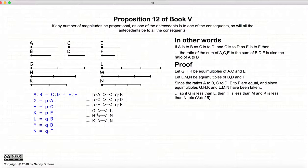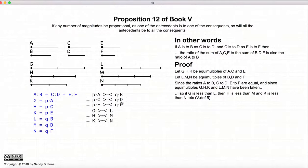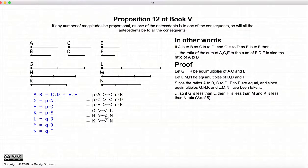Now, according to Definition 5, A to B equals C to D equals E to F means that if P times A is greater than Q times B, that also means P times C is greater than Q times D, which also means P times E is greater than Q times F. Since G equals P times A, H equals P times C, and so on, we now have: if G is greater than L, then H is greater than M, and K is greater than N.